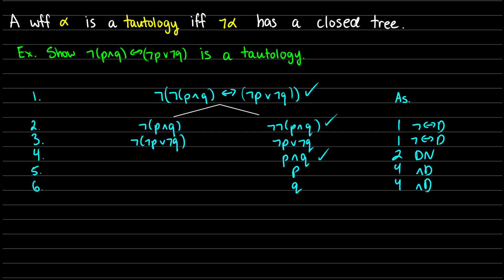At this point on the right side, the only thing left to do is take the branching paths with 'not-p or not-q'. So let's do or-decomposition, which gives us not-p on one branch and not-q on the other. This is line 7, from line 3, or-decomposition. Both right branches close because we have p and not-p — that closes one branch — and not-q and q, which closes the other right branch.